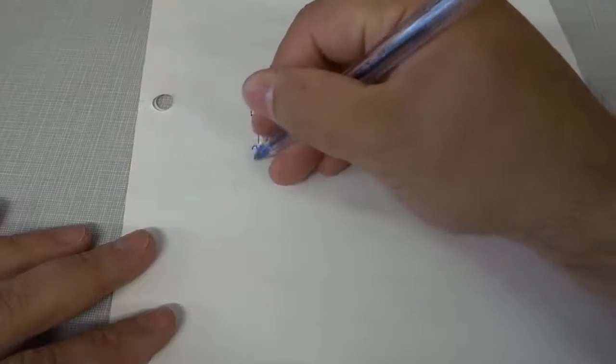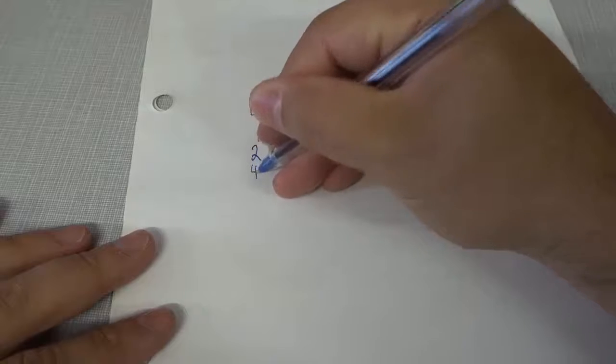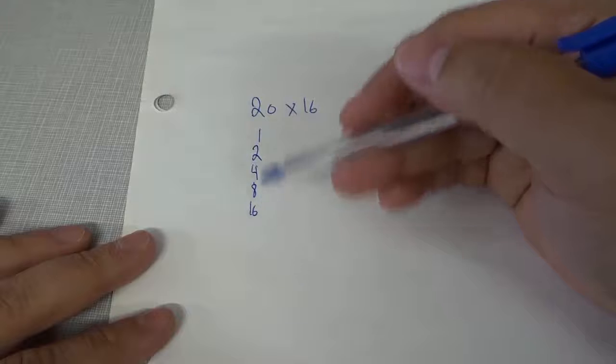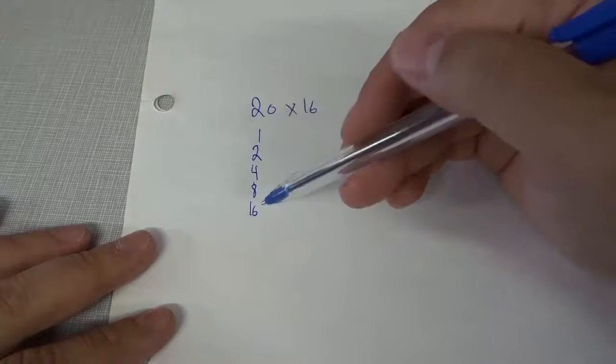So one, we're going to double it to two, double it to four, eight, 16. And then the next number, if I doubled this would take me over 20. So we're going to stop right there.